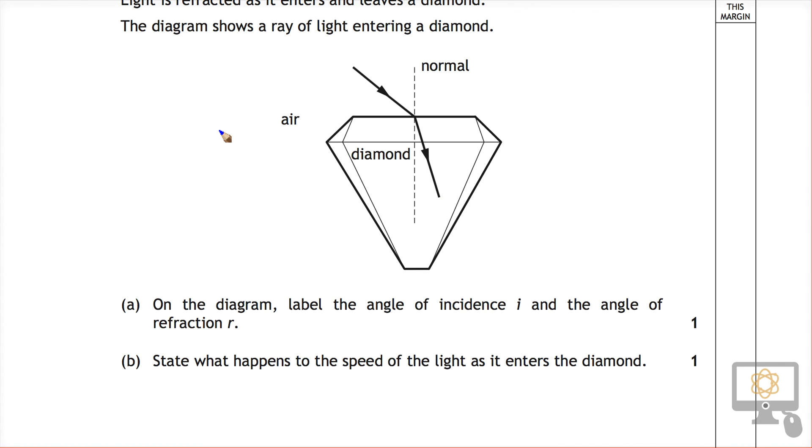Remember that this angle here is the refracted angle, and so that's the angle that we're looking for. If it bends the most, that means that R is really small.